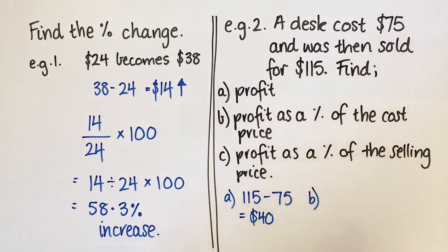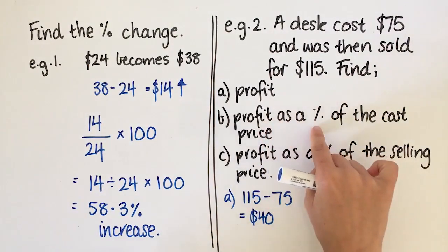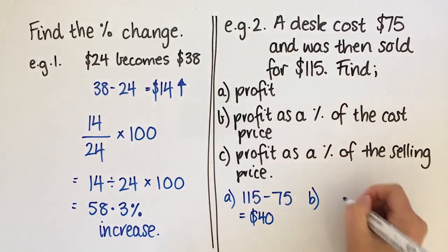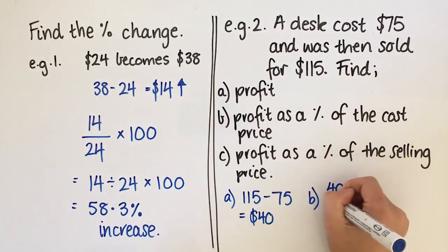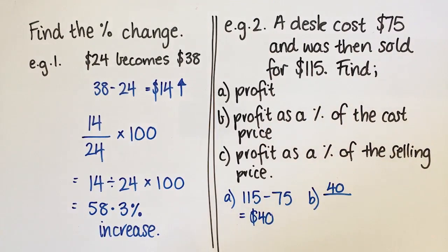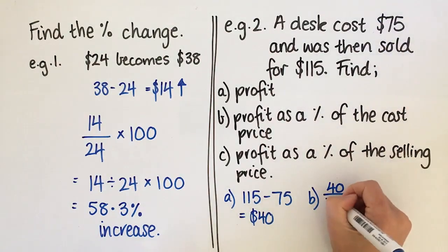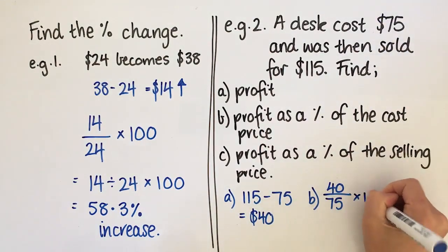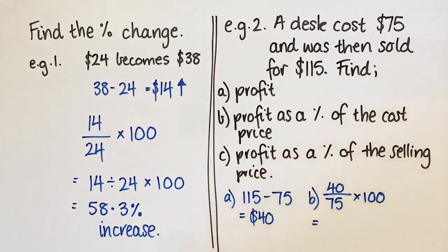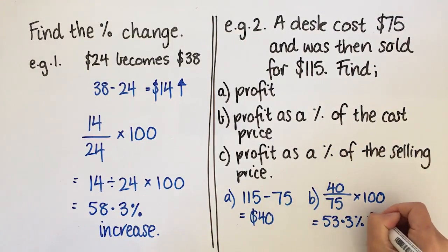The second thing we're asked is the profit as a percentage of the cost. So we know the profit is 40. As a percentage of the cost means we put it over the cost and we're going to times it by 100. So to do that on the calculator, it's 40 divided by 75 times 100. So that's going to be 53.33 percent increase.